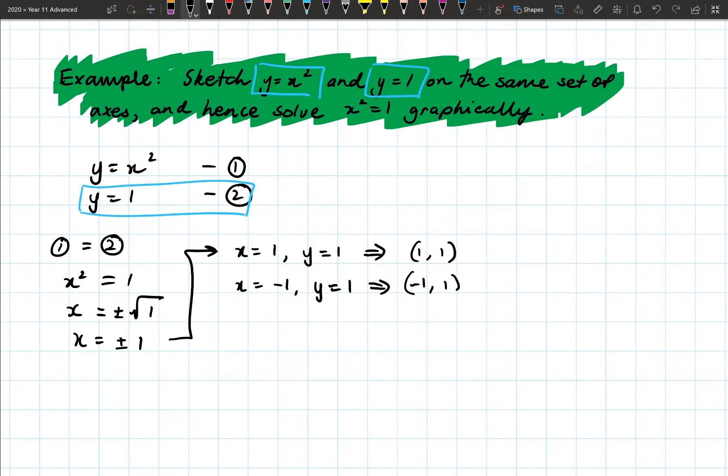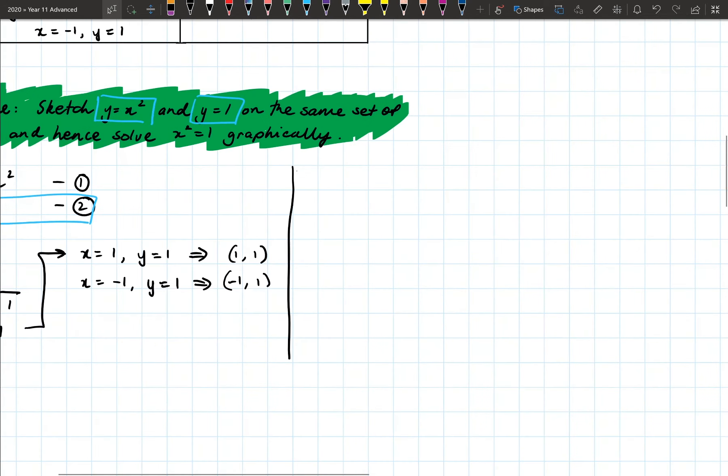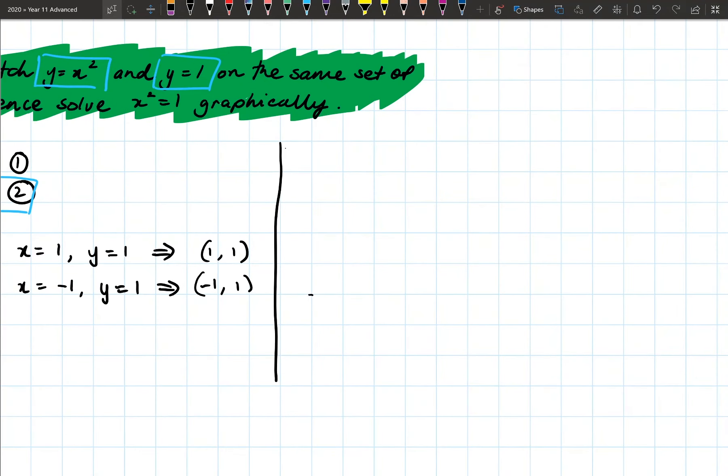Now, if we want to find the points of intersection, what this would actually look like is the points of intersection are, so based on this first solution, the points of intersection is one, one. And our second point of intersection is negative one, one. So that's how we actually connect the two. When we solved it simultaneously, we can actually use those solutions to help me find the points of intersection.